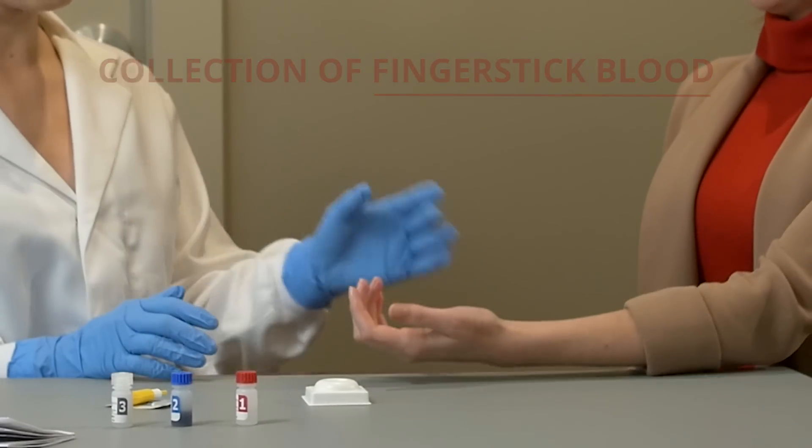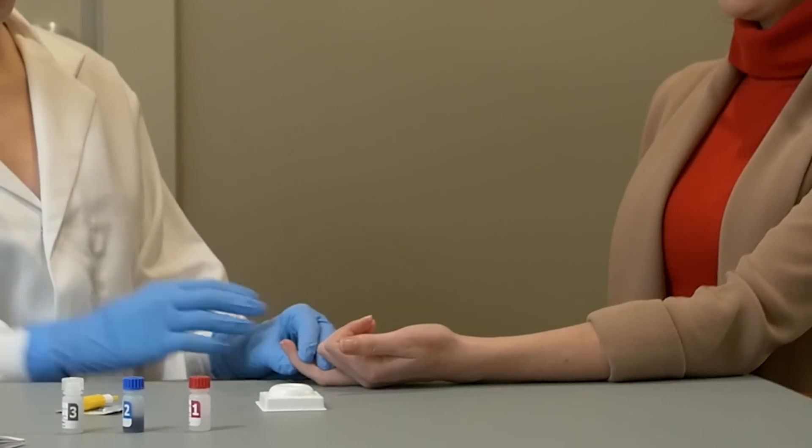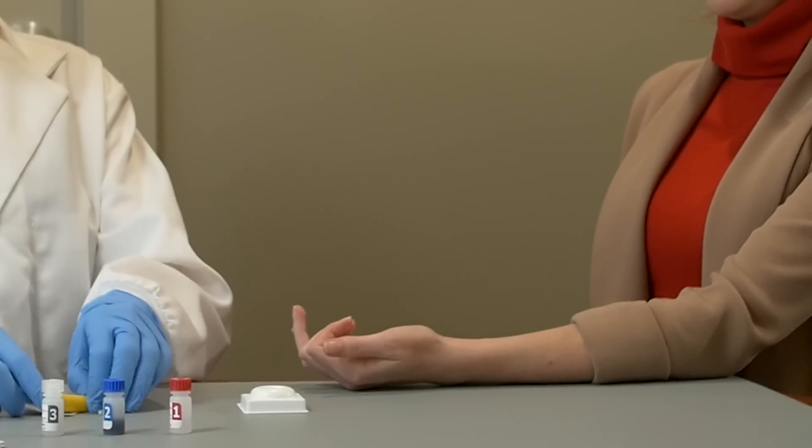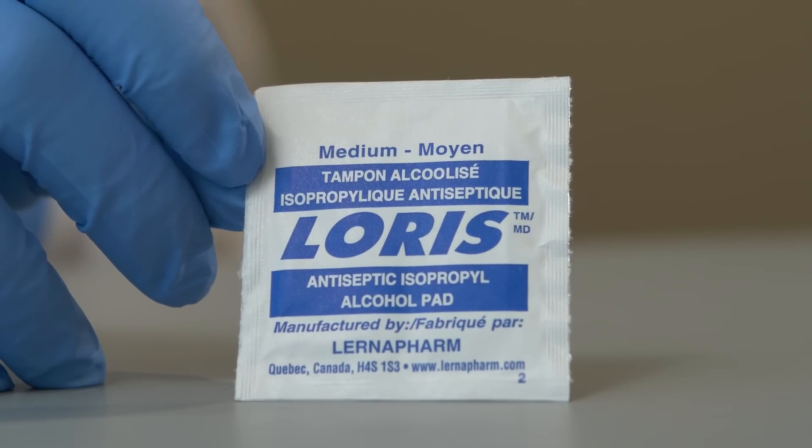Position the patient's hand in a way that is comfortable for the patient and allows you to easily press his or her finger to collect blood. The hand should be positioned at waist level or lower. Wipe the fingertip with the provided alcohol swab.